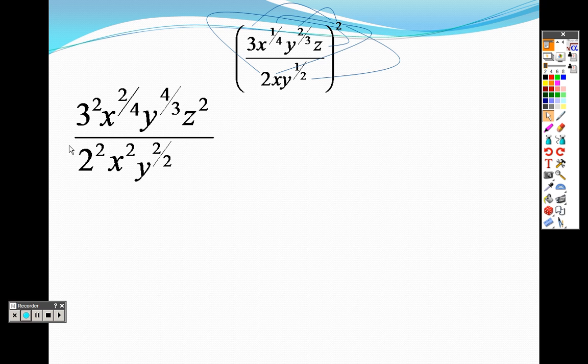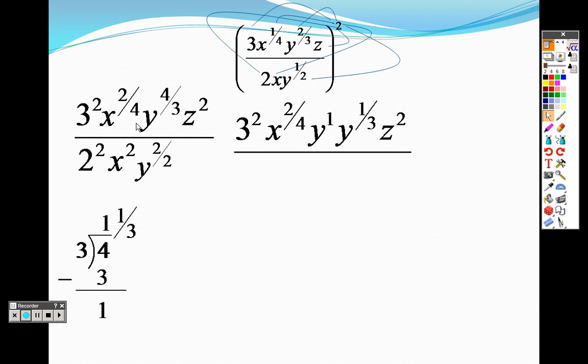So now let's simplify everything we can, and before we do that, I guess we're looking right here at this y. That's an improper fraction, so let's get rid of those improper fractions. How many times does three go into four? One time, with a remainder of one-third, so I'm rewriting that top as three squared, x to the two-fourths. That y to the four-thirds is separated into y to the one and y to the one-third, and z squared, and there is my bottom, which I simplify the two-over-two to just y.